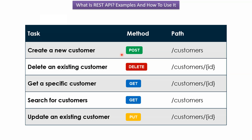To create a new customer, use HTTP method POST with the path slash customers. To delete an existing customer, use HTTP method DELETE with slash customers and the customer ID. To get a specific customer, use GET with slash customers and the customer ID. To update an existing customer, use HTTP method PUT with the path slash customers and the ID of the customer to update.